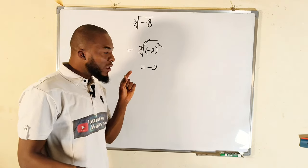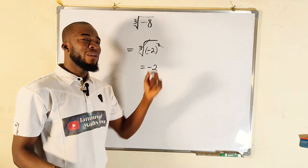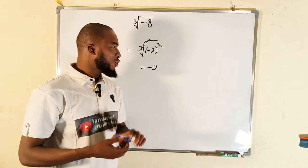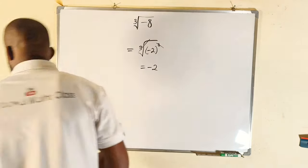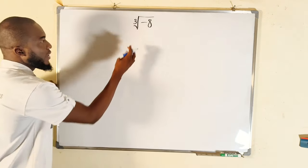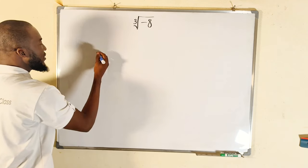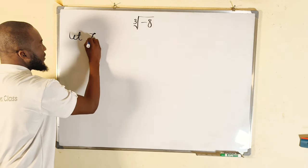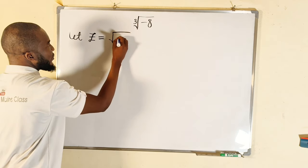We know that we could obtain other solutions in the set of complex numbers. In this tutorial I'll be showing you two different ways to do that. Let's start with the first method. In the first method, I would like to let the whole expression be equal to z, so let z be equal to the cube root of negative eight.